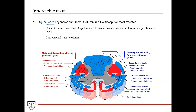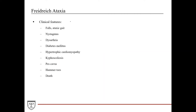Spinal cord degeneration is a hallmark of Friedreich's ataxia. Patients typically present between ages 5 and 15 with difficulty walking and loss of sensation in the extremities. It mainly affects the dorsal column and corticospinal tract. The dorsal column carries sensory neurons responsible for proprioception, light touch, and sensation, so patients have decreased deep tendon reflexes, decreased vibration sense, position, and touch. With the corticospinal tract affected, they also present with weakness. Clinical features include falls, ataxic gait, nystagmus, and dysarthria. These patients can also have diabetes mellitus, hypertrophic cardiomyopathy, and musculoskeletal defects such as kyphoscoliosis, pes cavus, and hammer toes, and unfortunately premature death.